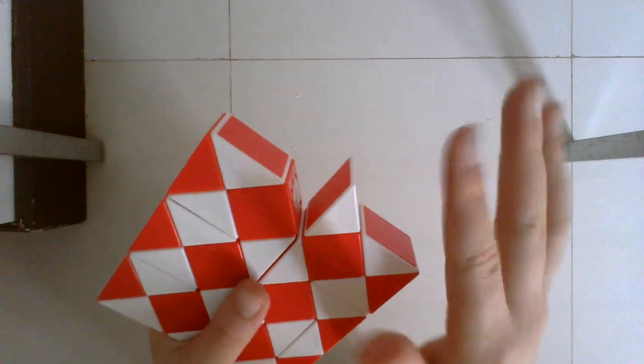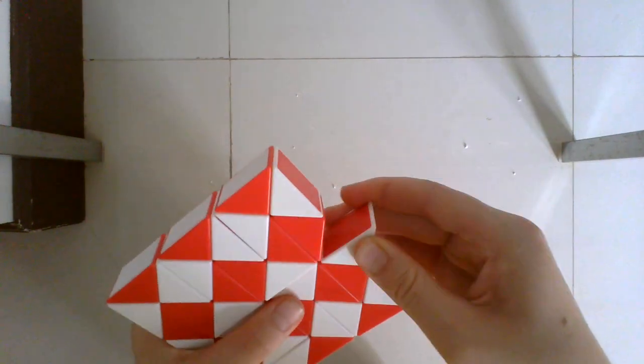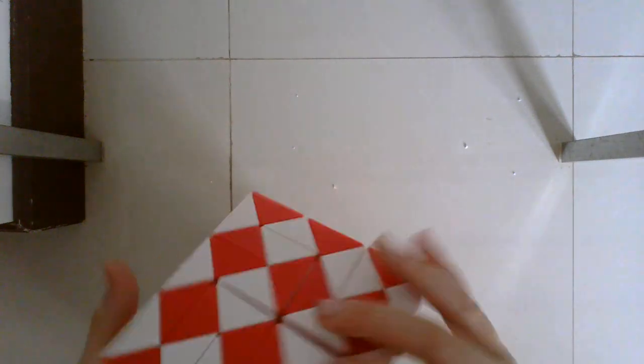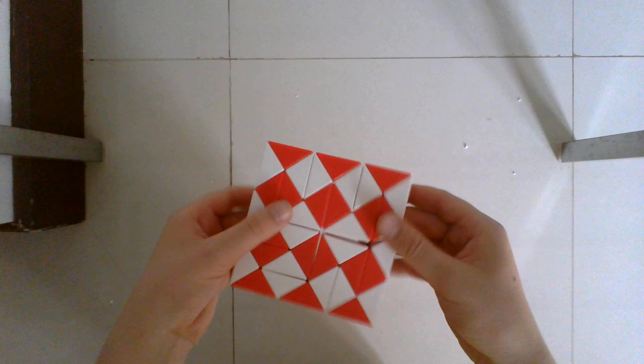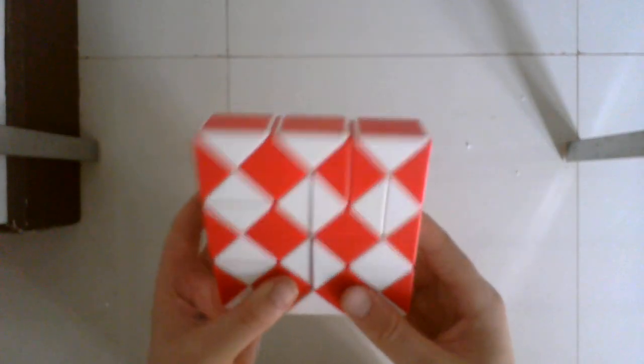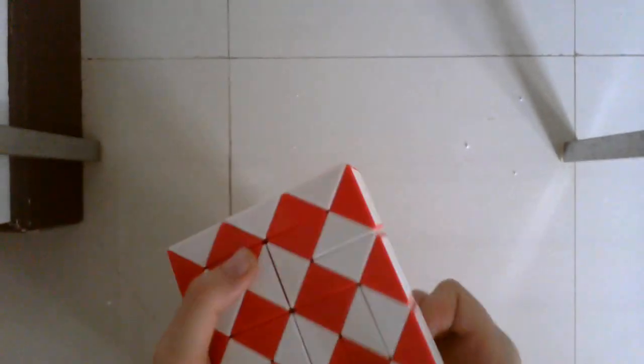And then I almost have a square. And the last thing you need to do is just flip this twice and now you have a perfect square, which is pretty cool. I hope you guys enjoyed this tutorial on how to make a perfect square with a snake puzzle thing.